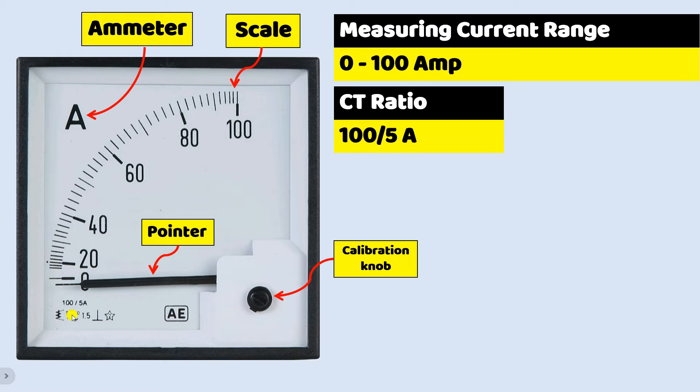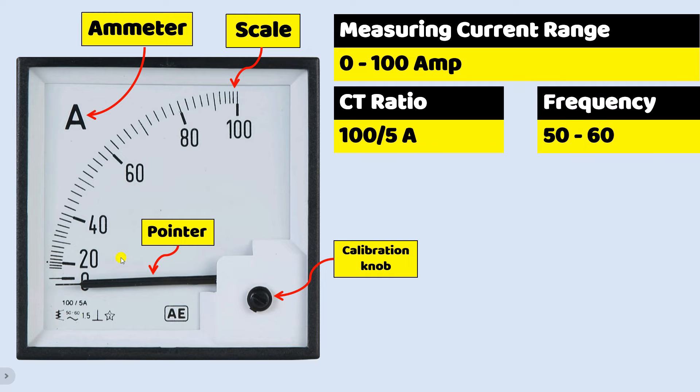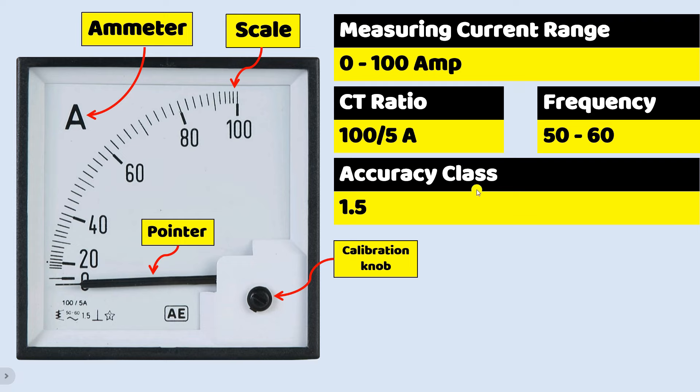Apart from this, it is written here 50 by 60. It means frequency. At how much frequency this ammeter will be used, this detail can be seen here. At the side of this it is written here 1.5. 1.5 means accuracy class, or you can call it error ratio. At the time of measuring current, the percentage of error that can occur through this ammeter is shown here.